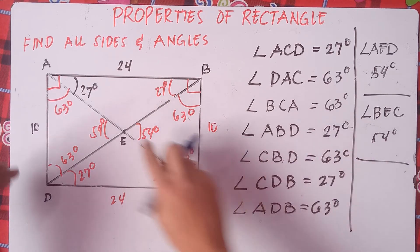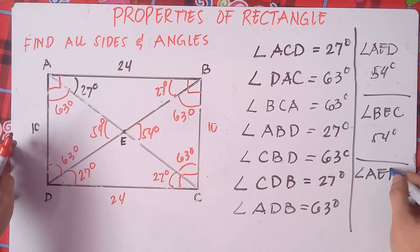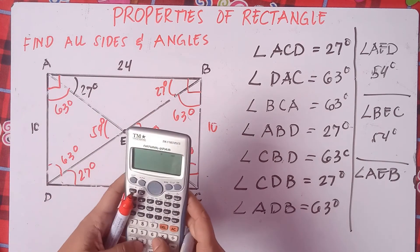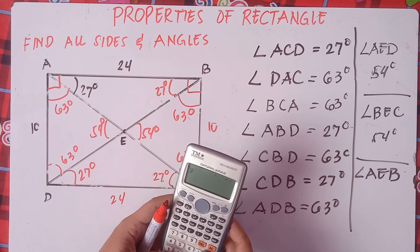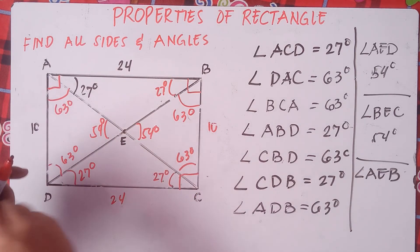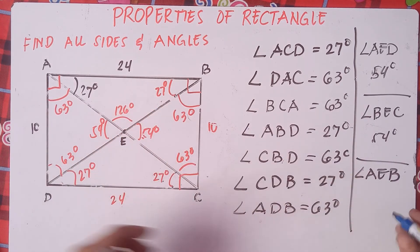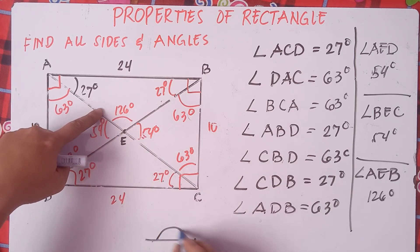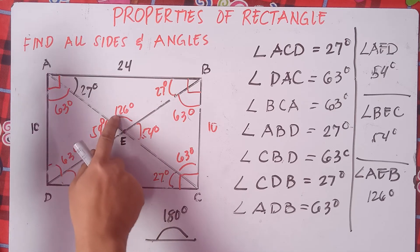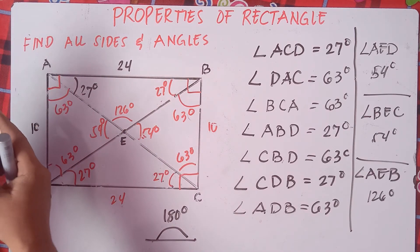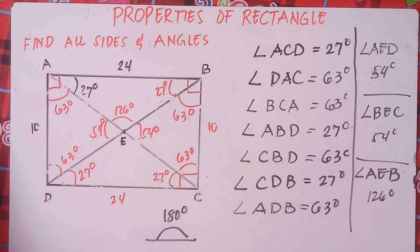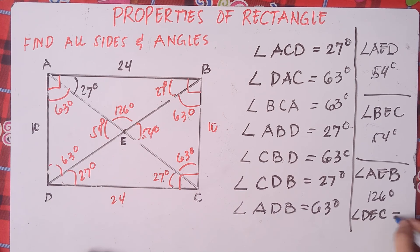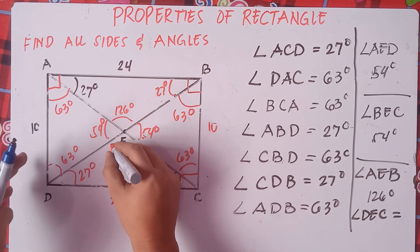For angle AEB: 27 plus 27 equals 54, and 180 minus 54 equals 126 degrees. So angle AEB is 126 degrees. Do not forget that a straight angle measures 180 degrees, so 126 plus 54 equals 180 — that's correct. By vertical angles, angle DEC is also equivalent to 126 degrees.